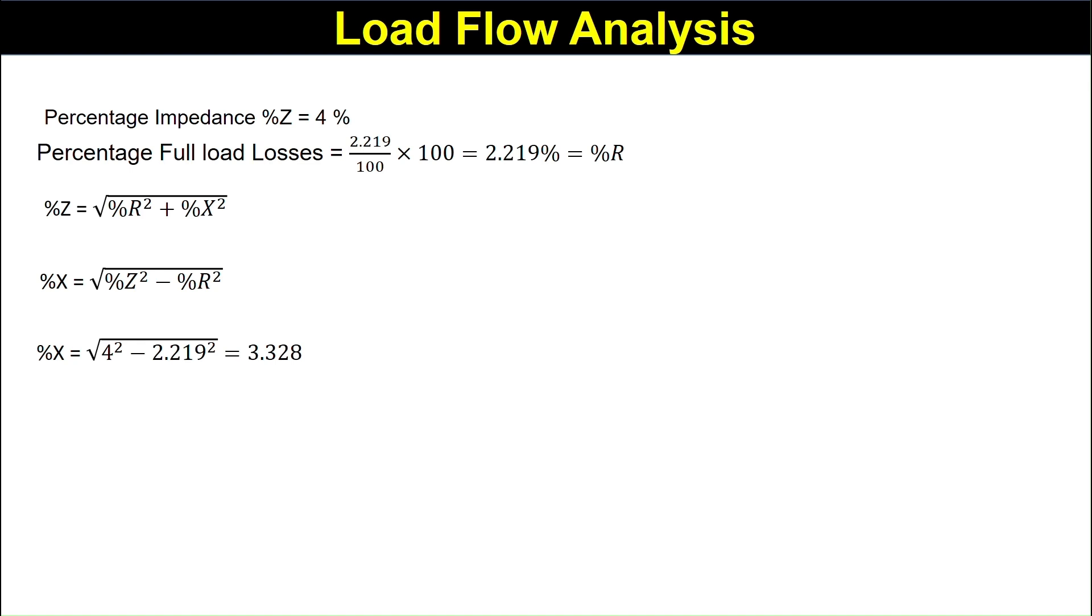Now, we have calculated the percentage of R and percentage of X. And, X by R is equal to 3.328 divided by 2.219, it becomes 1.499, that is approximately 1.5.